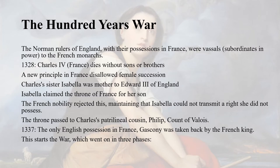Why should the English rulers claim the throne of France? The Norman rulers of England, with their possessions in France, were vassals or subordinates in power to the French monarchs. In 1328, Charles the Fourth of France died without a male successor — without sons or brothers. At this time there was a new principle in France which disallowed female succession. Charles had a sister named Isabella, who was married into the royal family of England and was the mother of Edward the Third, King of England.